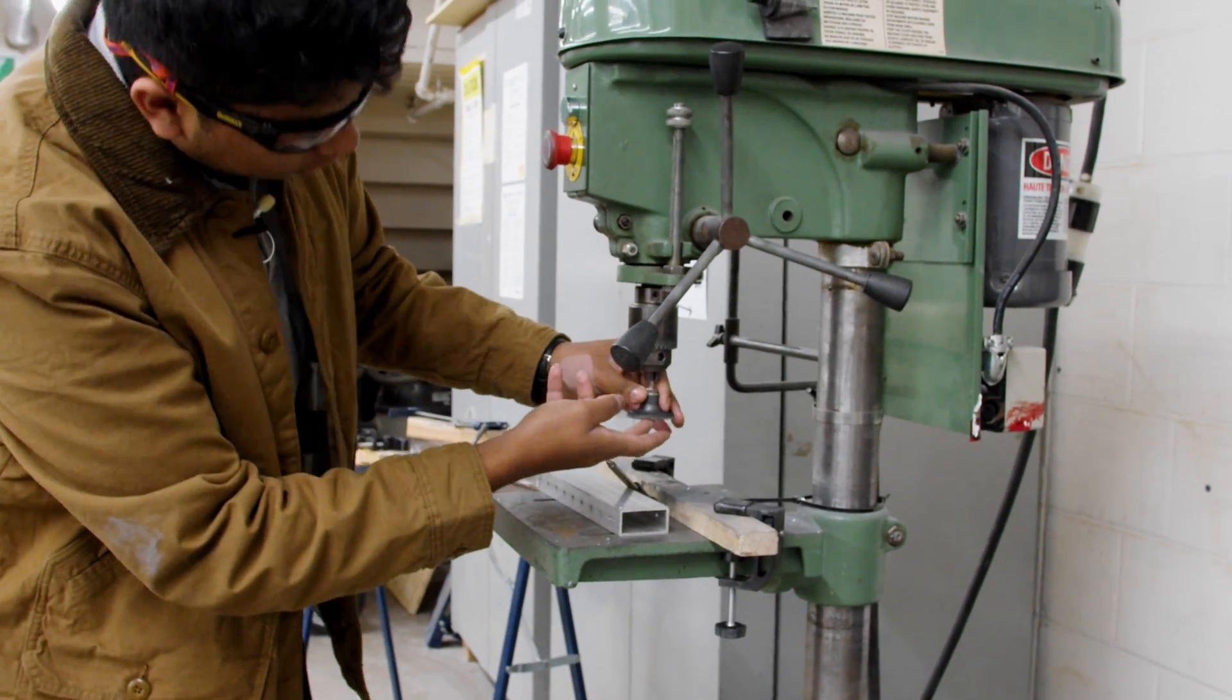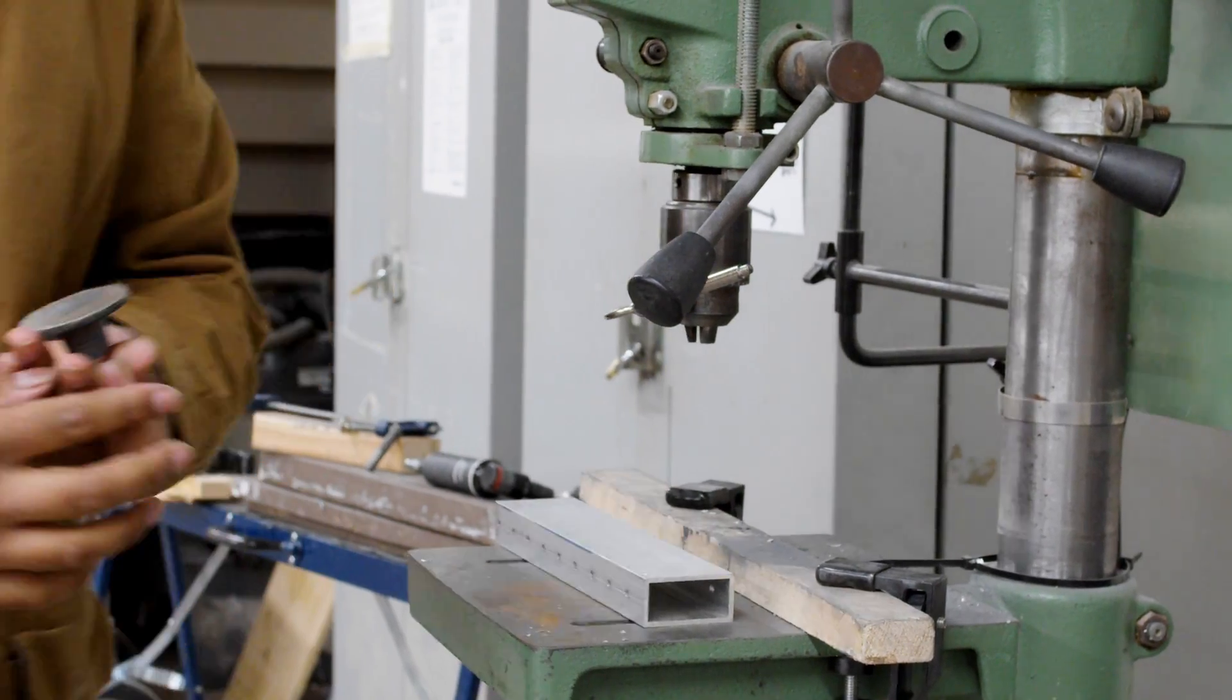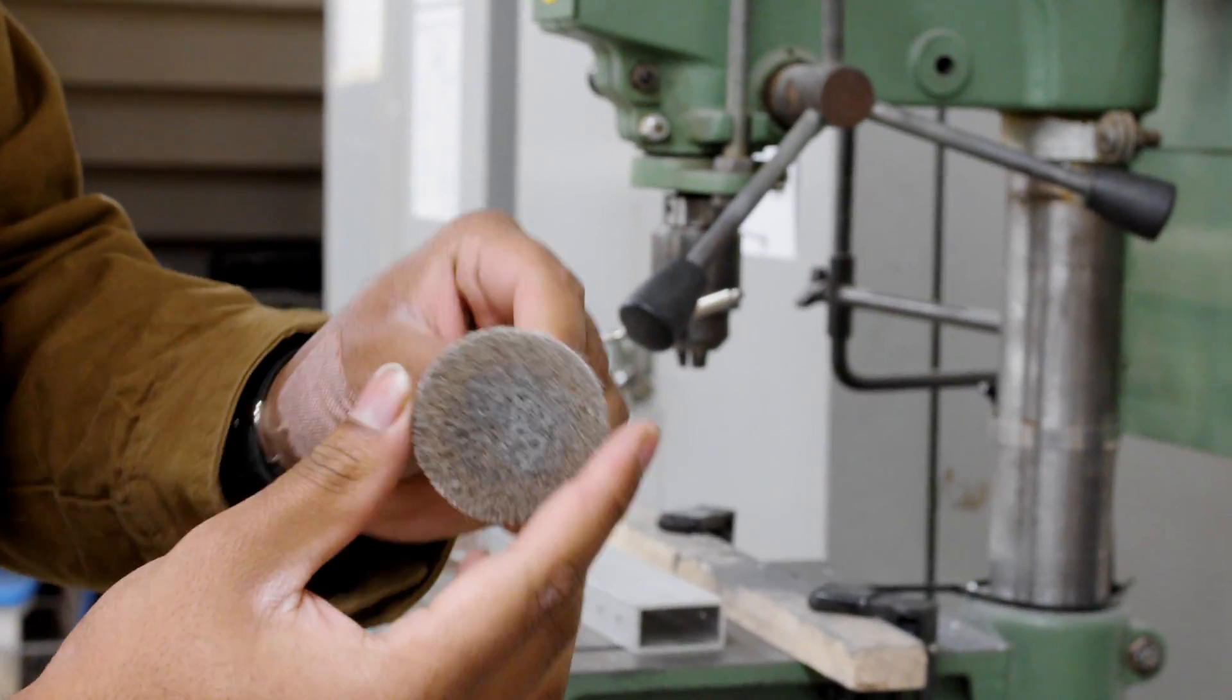I've just put a regular sanding pad inside of it. These are, I believe they're called scotch brite pads. It's just this over here.